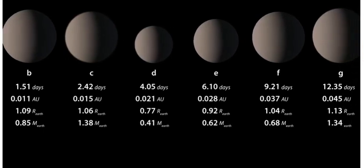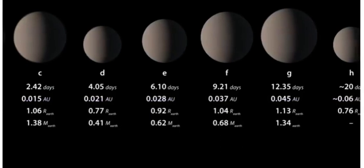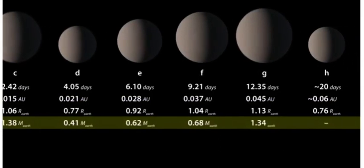The transits tell us a lot about these planets, including their size, orbital period, distance from the star, and for some of them, their approximate mass and density.